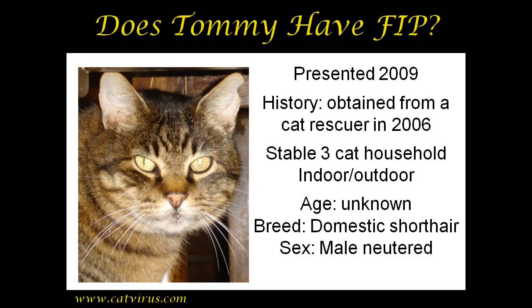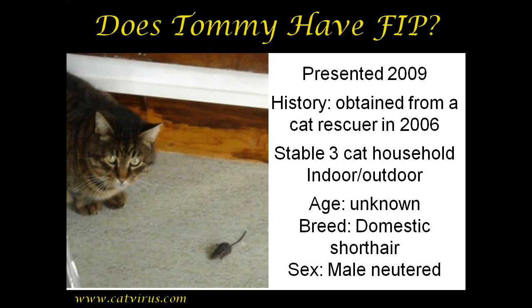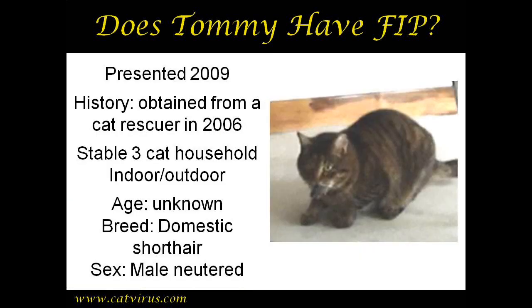This is Tommy. He was presented in 2009. Step one of the diagnosis algorithm is the history. He was obtained from a cat rescuer in 2006. At time of presentation he was living in a stable three-cat household — in other words, there have been no new cat introductions into the household since 2007. He was an outdoor-indoor cat. Age was unknown but clearly he is an adult, or at least of middle age, not a kitten.